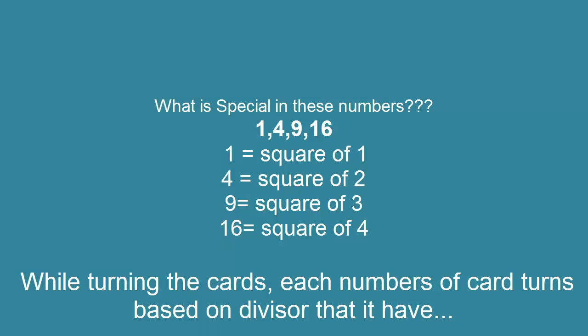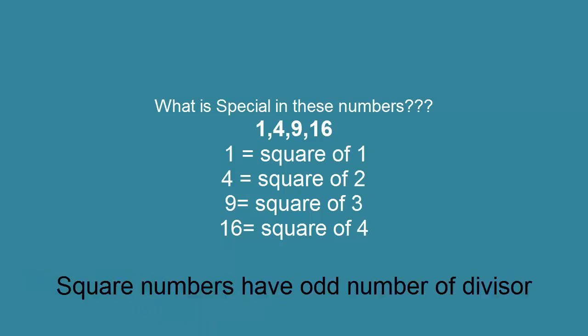And the reason is very simple. Only square numbers have an odd number of divisors. When we were turning these cards, each card was turned based on the number of divisors that it had.